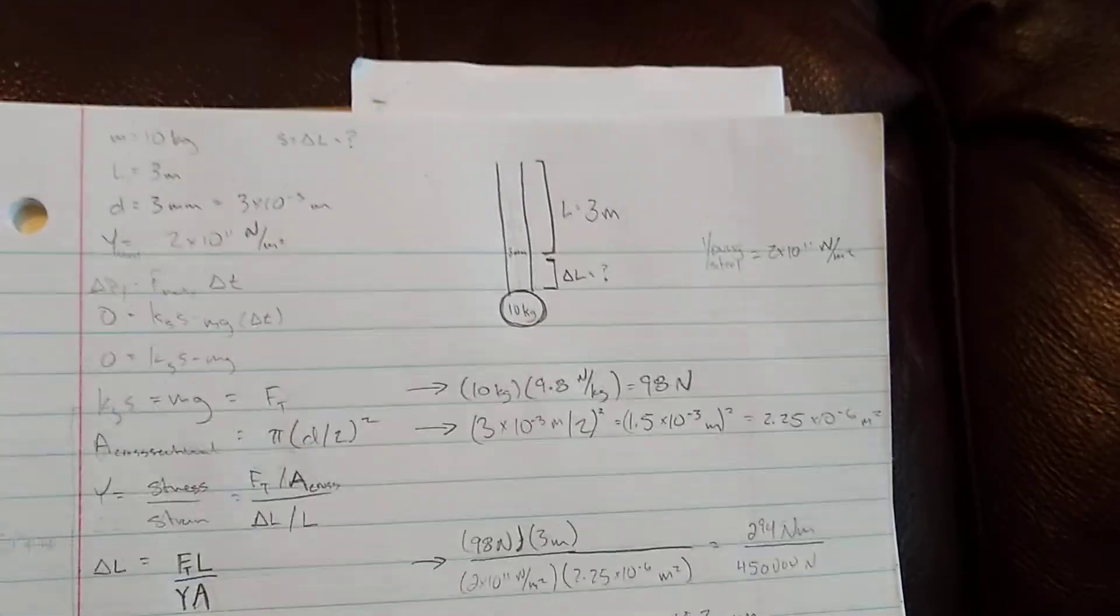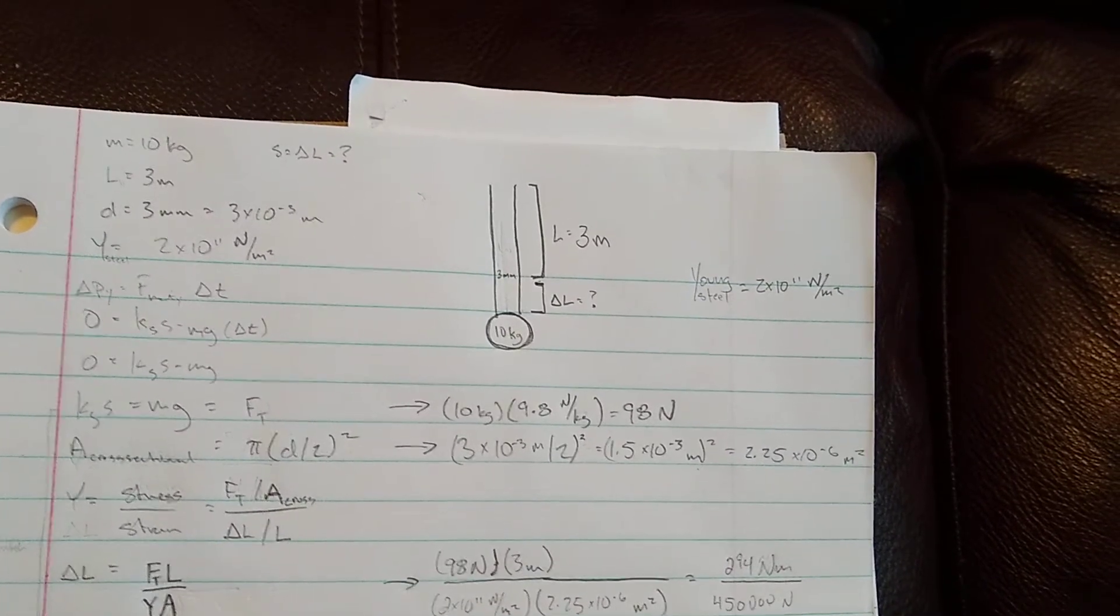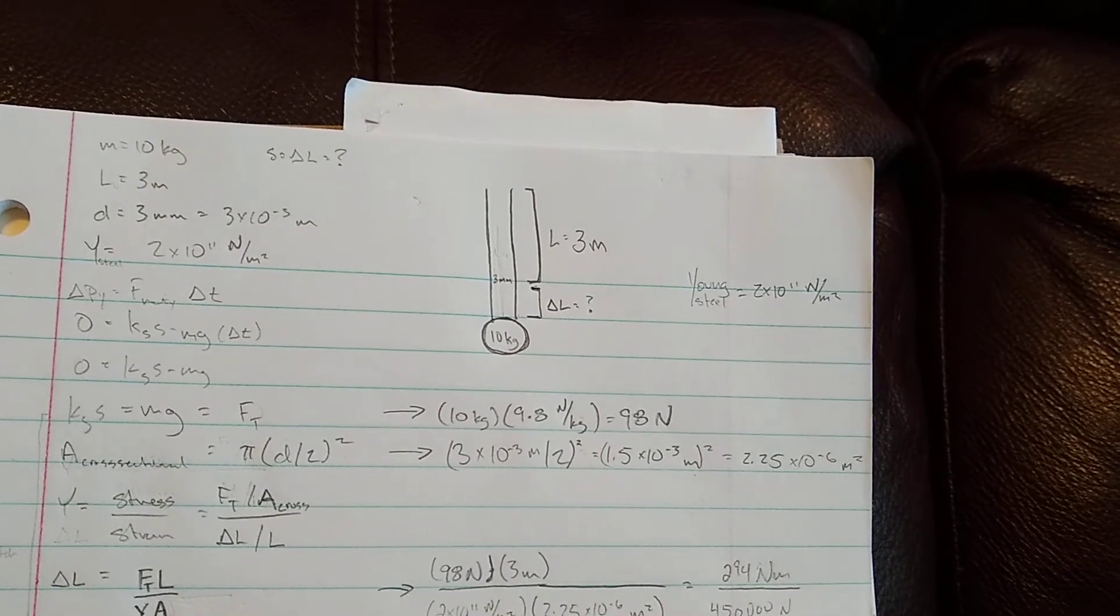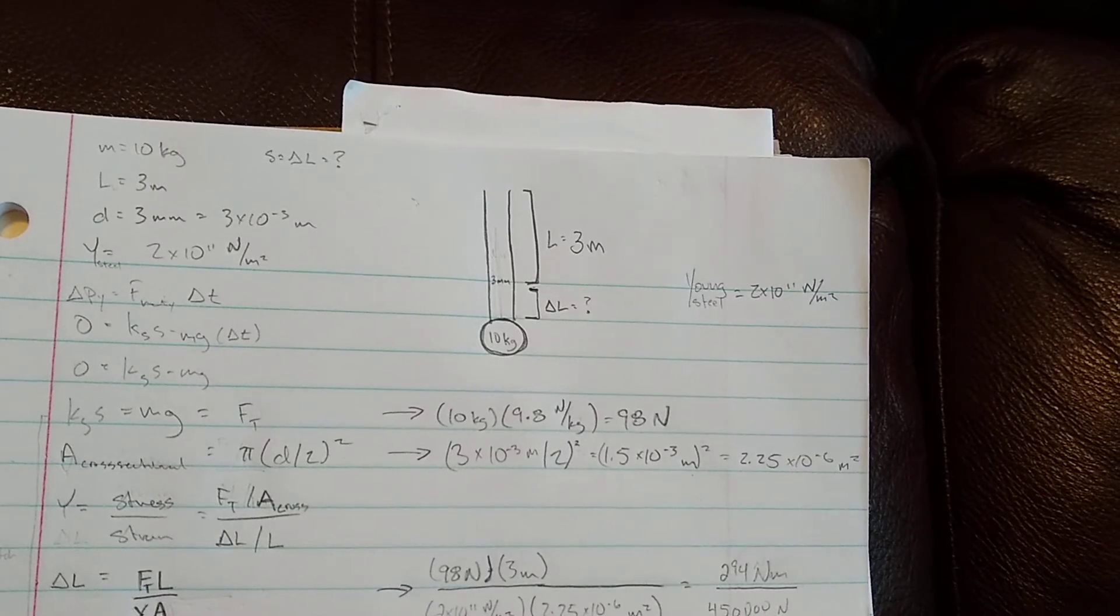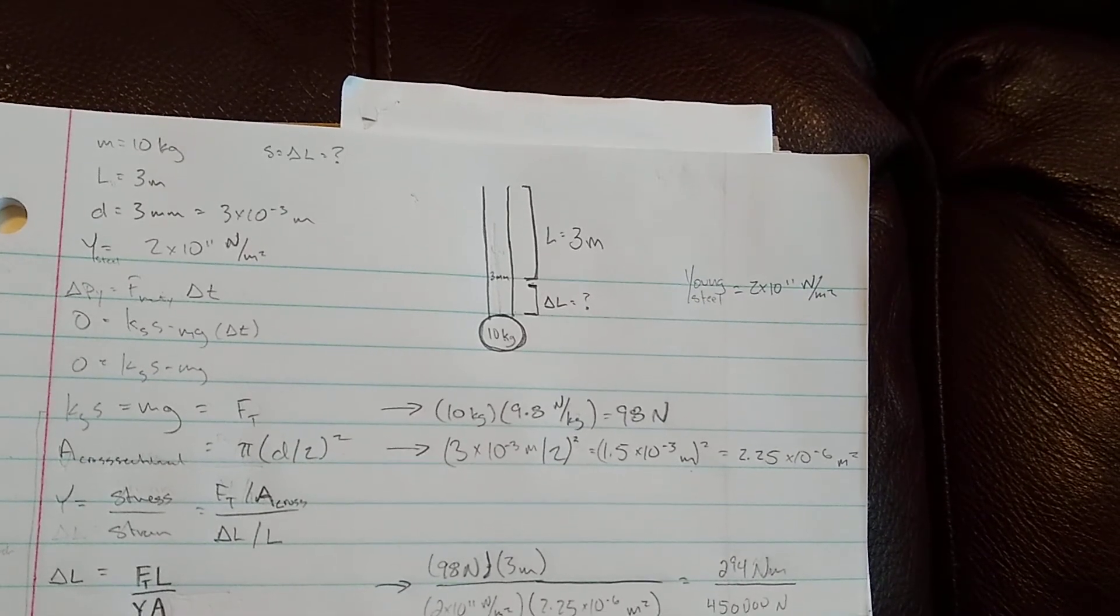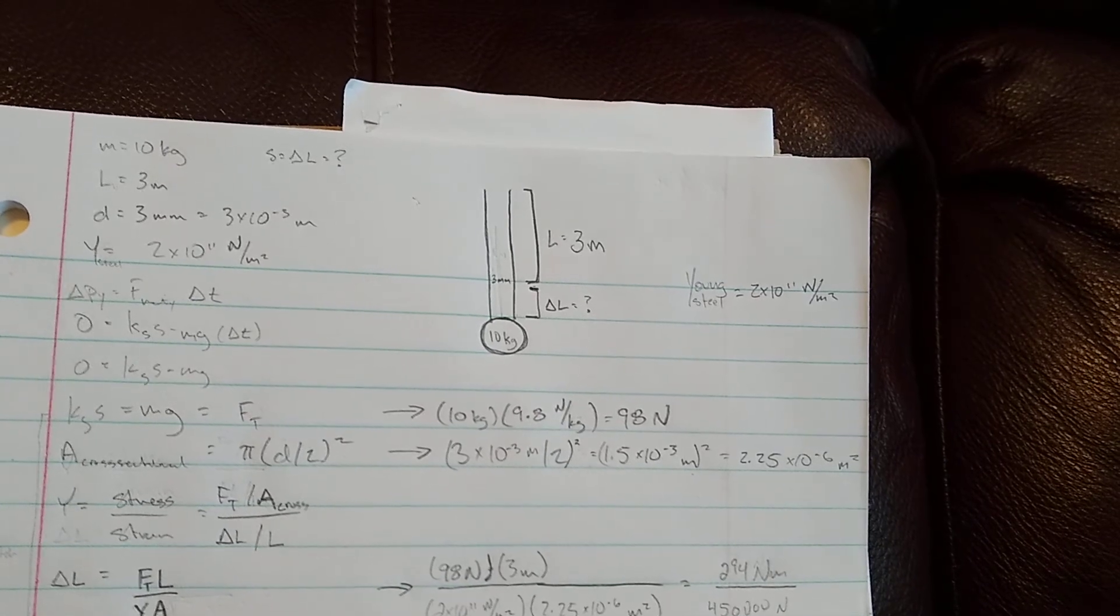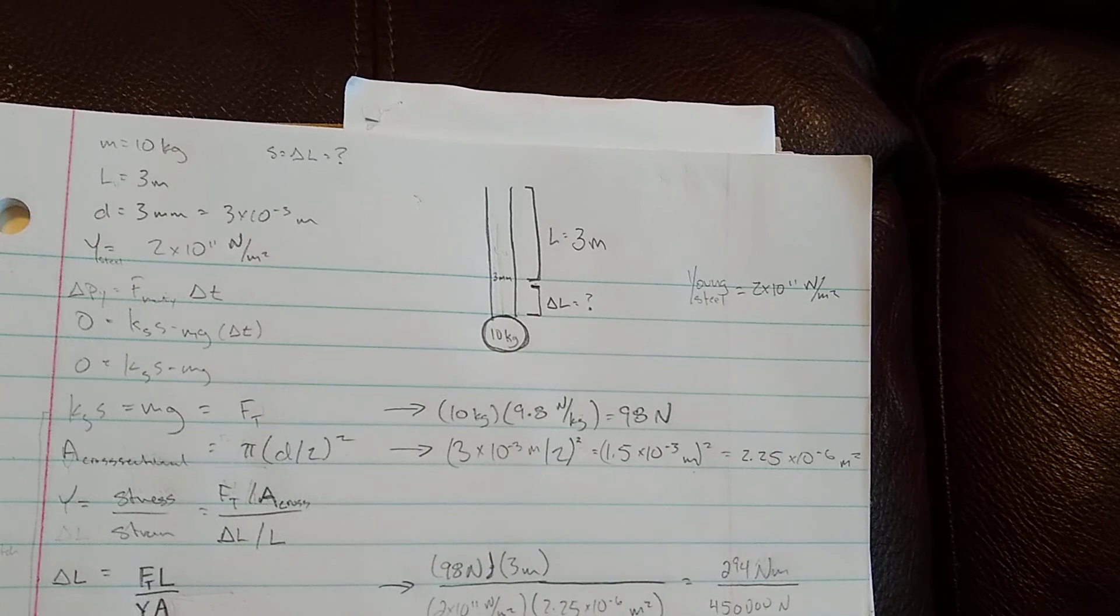Okay, anyways, so yeah. You can use Young's modulus to find the stretch of a wire if you know Young's modulus for that wire, and how much weight you're using to stretch that wire, and the original length of that wire. And also, you need to know the width so you can calculate cross-sectional area. Alright, thanks.